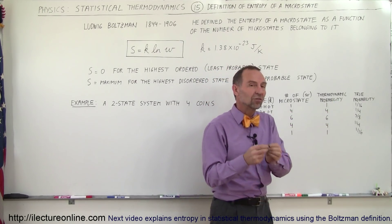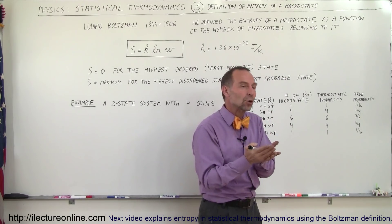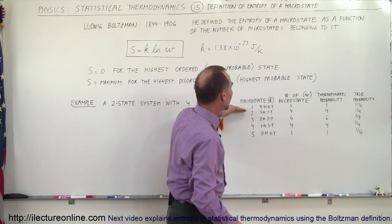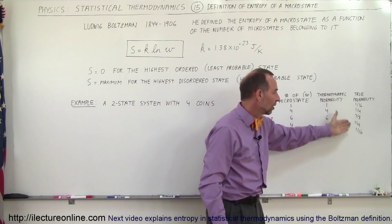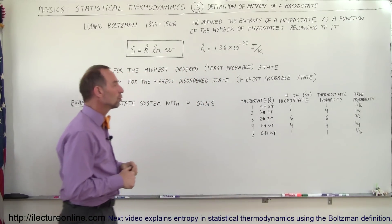And the true probability is what is the probability that that particular scenario, or that particular arrangement of microstates can exist in a particular macrostate. And when you add these up, they add up to one, because that's usually how we denote the true probability.